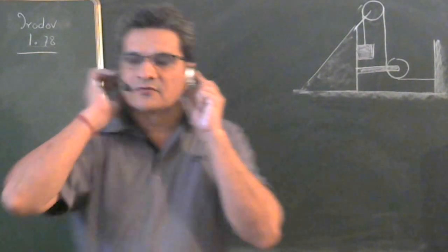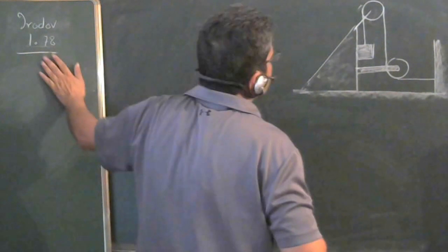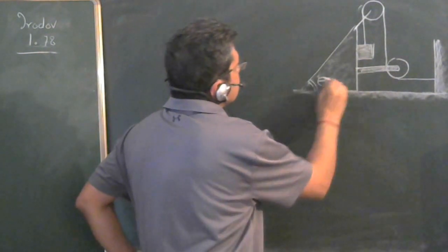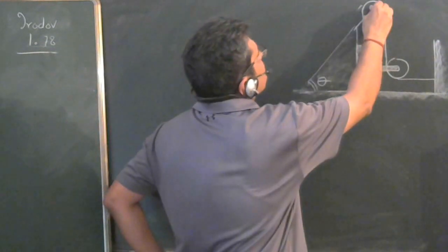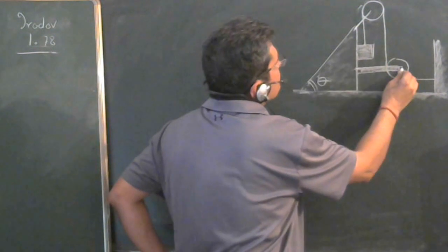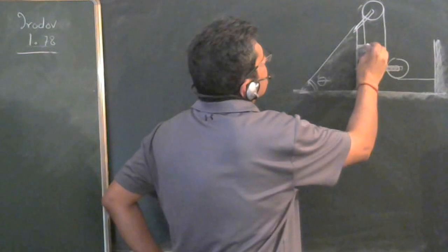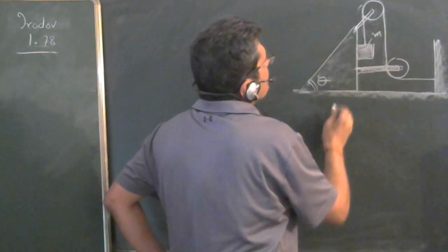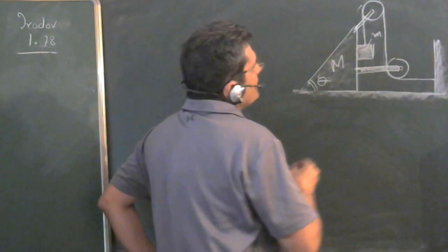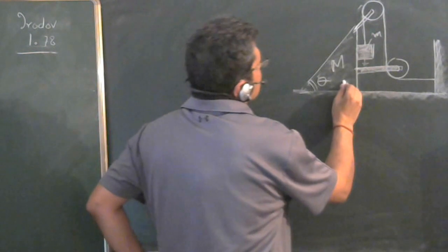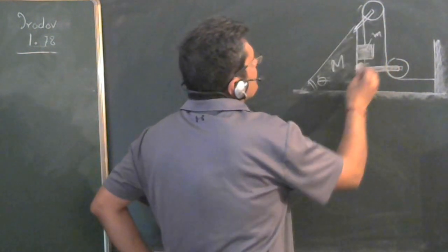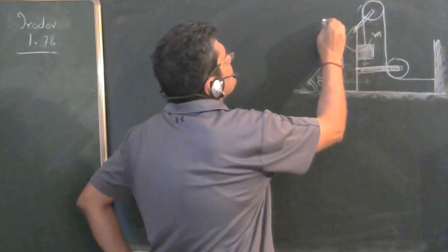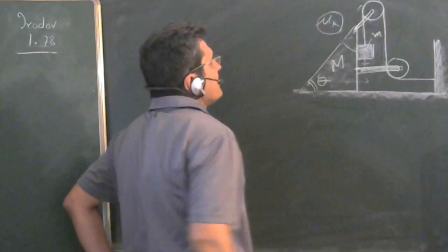We will solve Irodov problem 1.78, which is based on constraint motion. There is a block (wedge) with an angle theta, connected to a pulley arrangement. Two bodies are connected by a string passing through the pulley. The mass of the smaller body is m and the mass of the wedge is capital M. When the hanging body falls down, the body on the wedge moves horizontally. We have to find the absolute acceleration of mass M. There is friction between the two surfaces with kinetic coefficient μK.